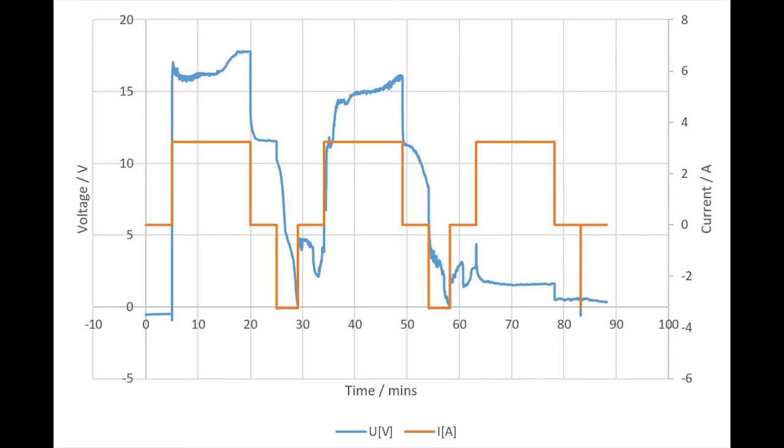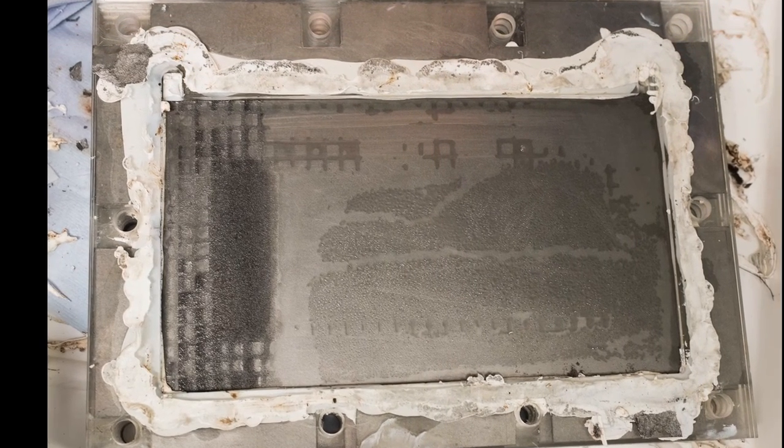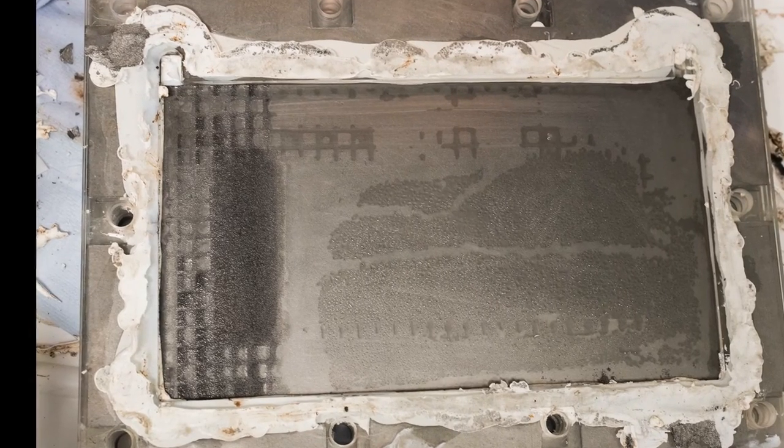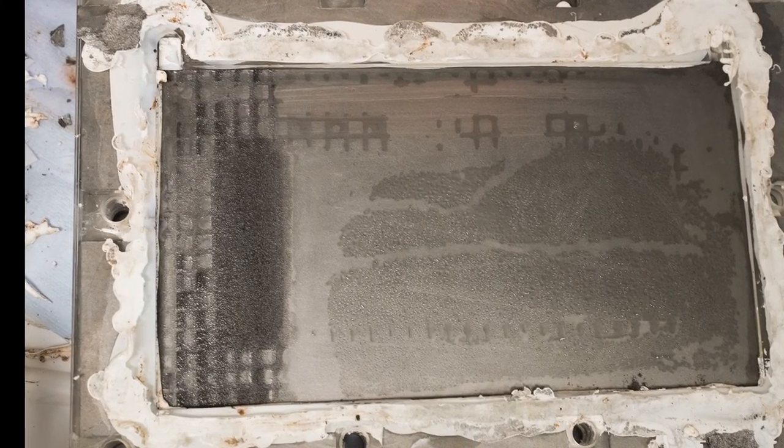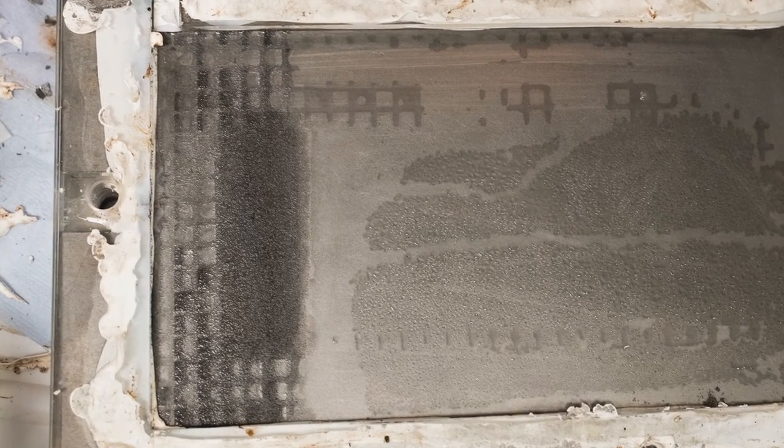Here the results show that the system only completed two cycles before failing. On dismantling the battery again the deposits on the electrodes were all at the bottom of the battery, due to the high density of lead in the stationary electrolyte.